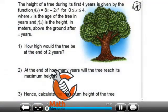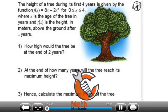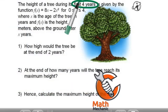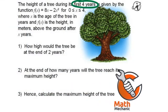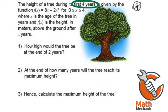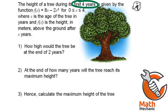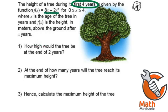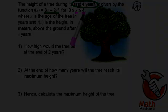The height of a tree during its first four years is given by the function f(x) = 8x minus 2x squared, and they're telling us that x is smaller than or equal to